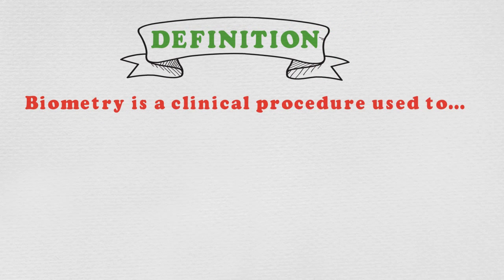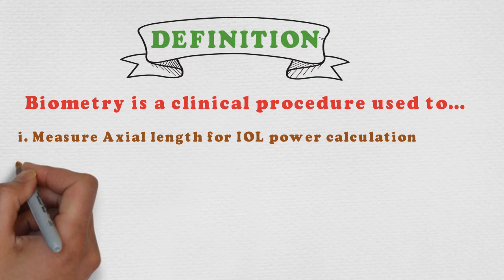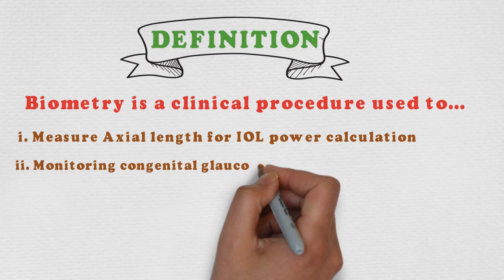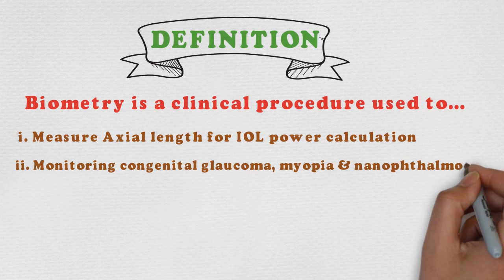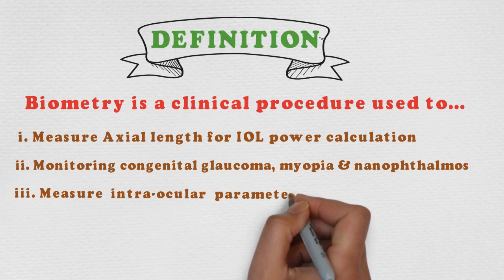Biometry is used to: one, measure axial length for IOL power calculation; number two, monitoring congenital glaucoma, myopia, and nanophthalmos; number three, measure intraocular parameters.